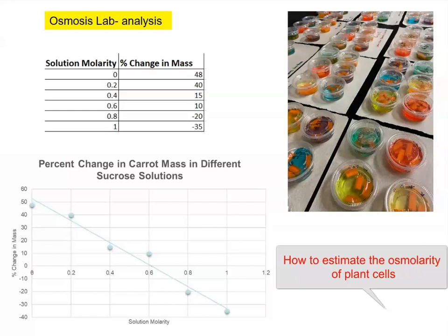So we have prepared different sucrose solutions. You can see they had different molarities: 0, which was pure water, 0.2, 0.4, 0.6, 0.8, and 1.